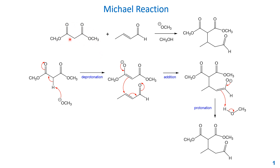This is a very typical Michael reaction using the malonic ester, but the Michael donor can also be other carbonyl compounds like a ketone, and the Michael acceptor can also be a ketone or other reactants like a nitro group. We'll look at that example on the next slide.